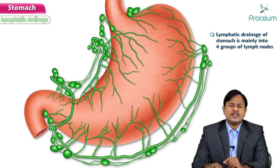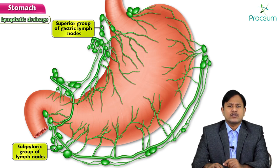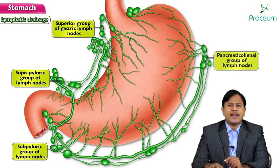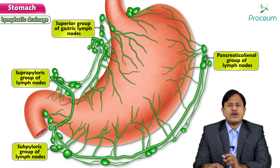The lymphatic drainage of the stomach is mainly into four groups of lymph nodes: the superior gastric group at the cardiac junction, the subpyloric group, the suprapyloric group, and the pancreaticosplenic group. Two groups are on the right side and two on the left side, draining the four quadrants of the stomach.